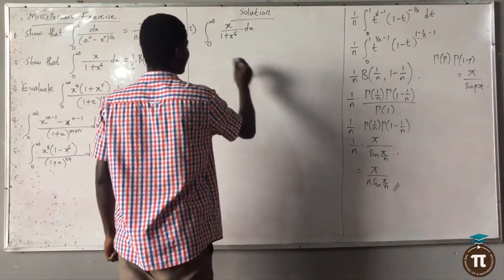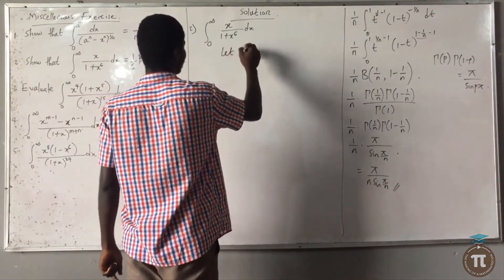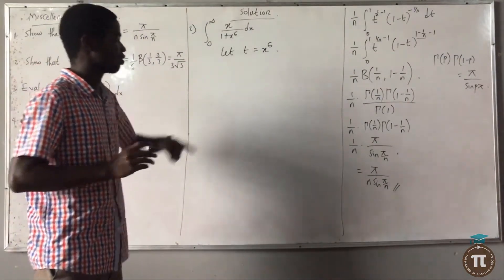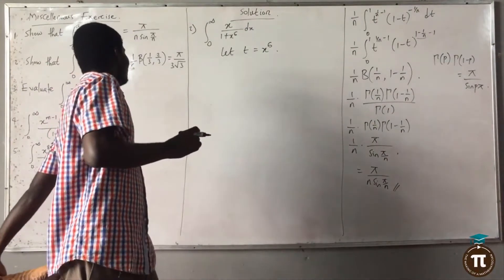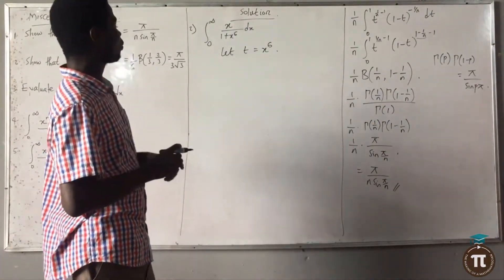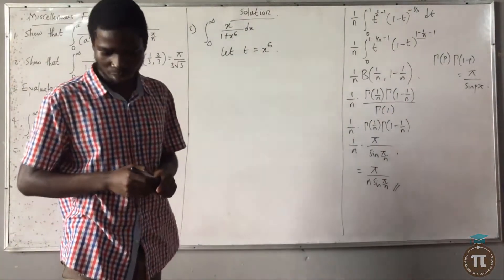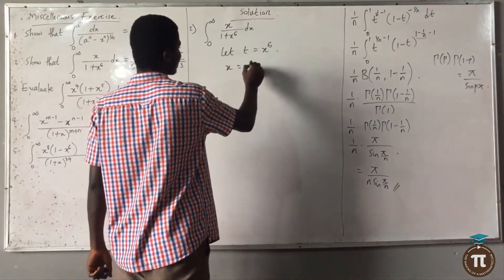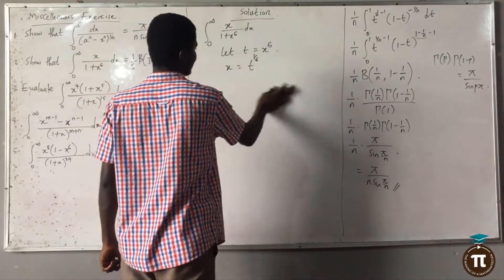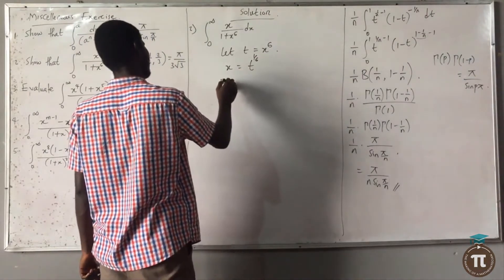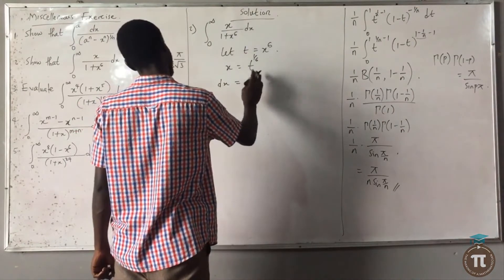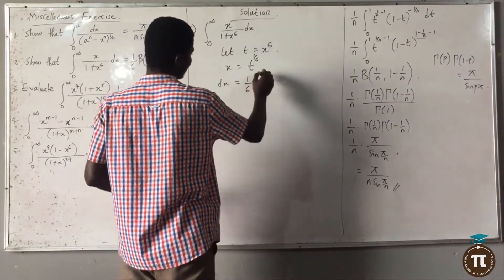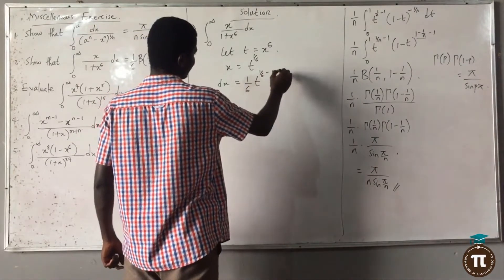In this case, I will let t equal x^6. When you let t equal x^6, then x equals t^(1/6). So ds equals 1/6 · t^(1/6 - 1) dt.